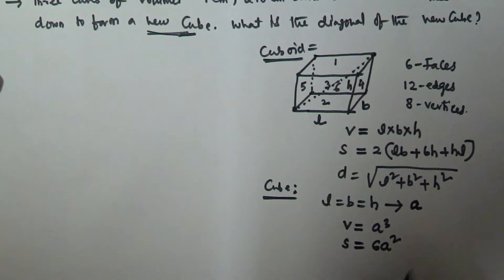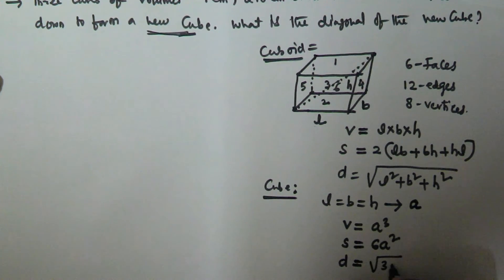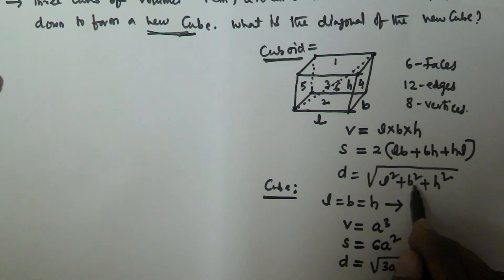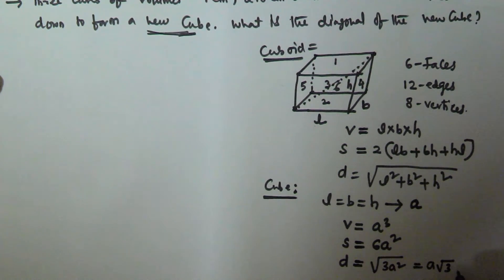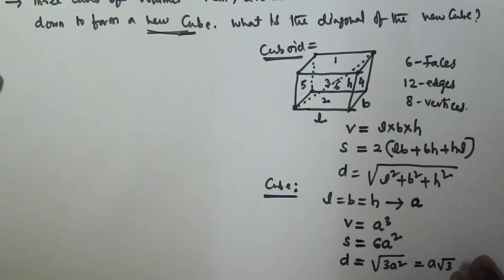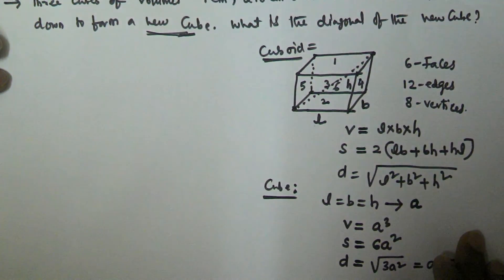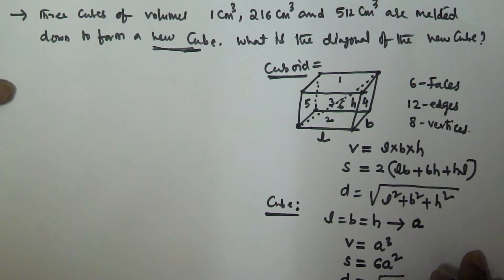The diagonal of the cube is given by D = √(A² + A² + A²) = √(3A²) = A√3. So the diagonal of the cube is A√3. These are the important formulas related to the cube and cuboid.